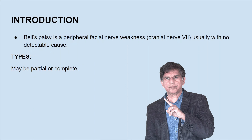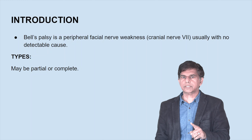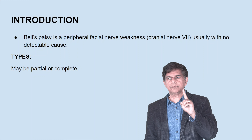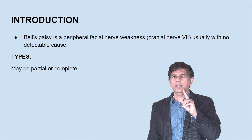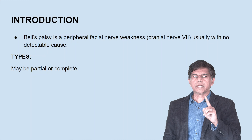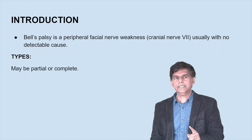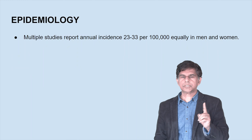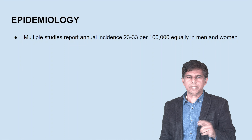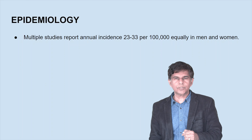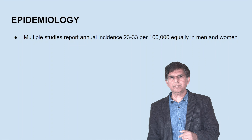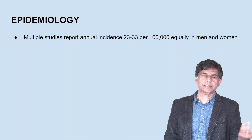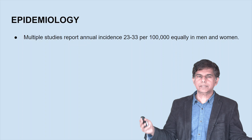Bell's palsy is a peripheral facial nerve weakness. Cranial nerve 7 is involved — it's a peripheral facial nerve. Types: it could be partial or complete. Epidemiology: annual incidence is about 23 to 33 per 100,000, equally in men and women. The cause is mostly idiopathic — nobody knows why it's happening.